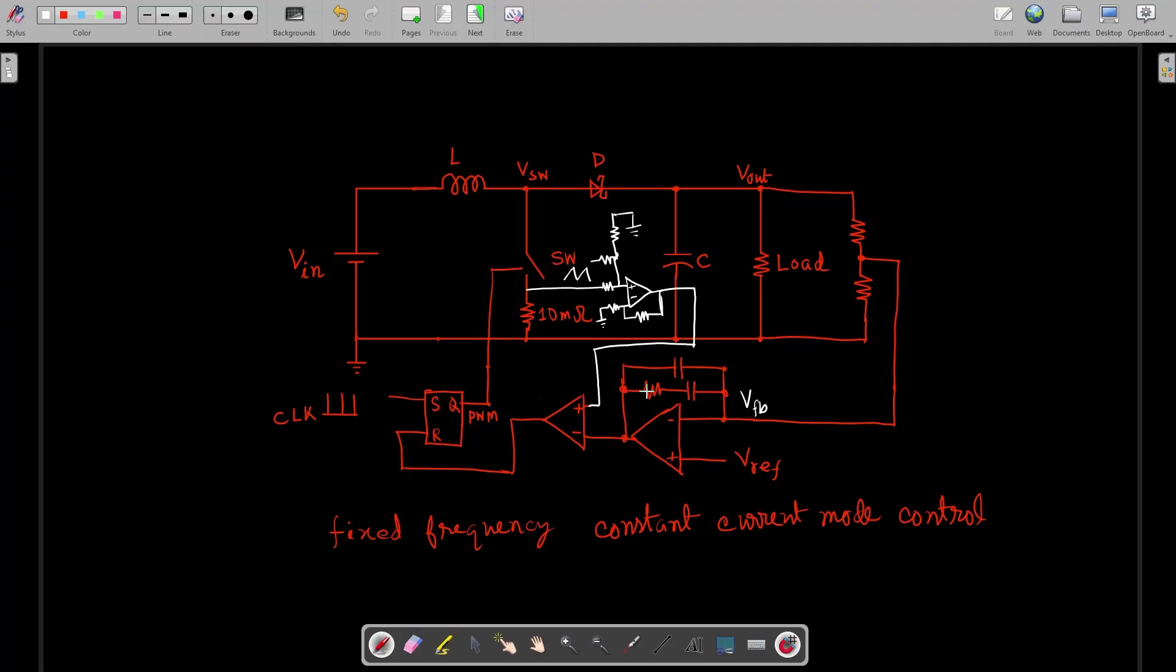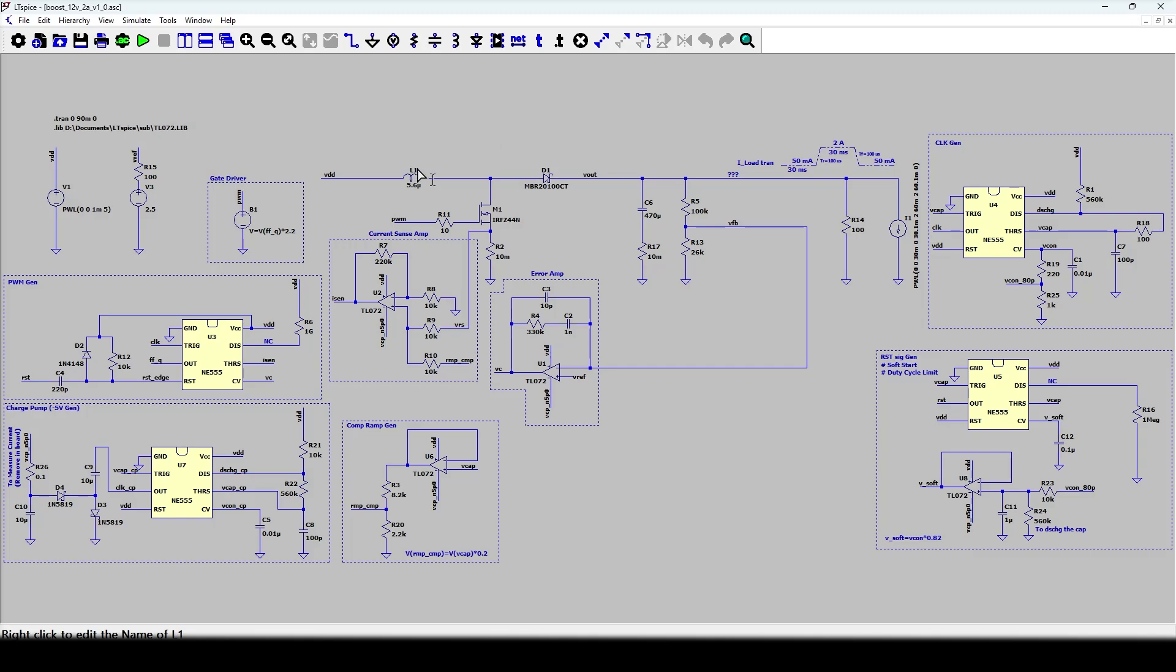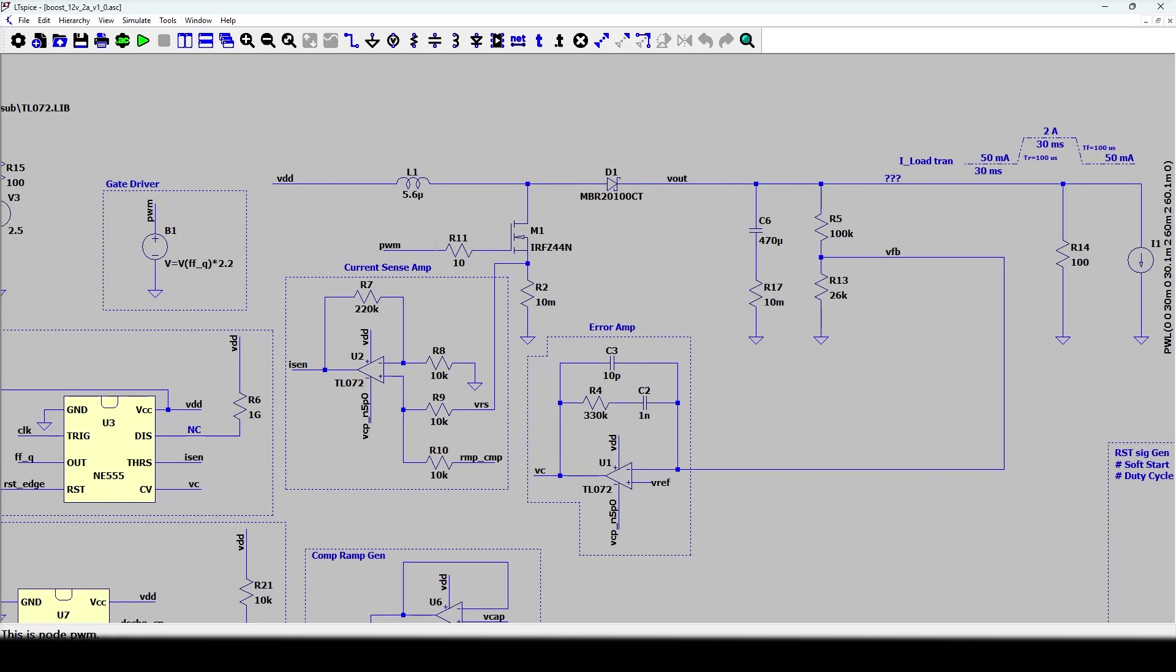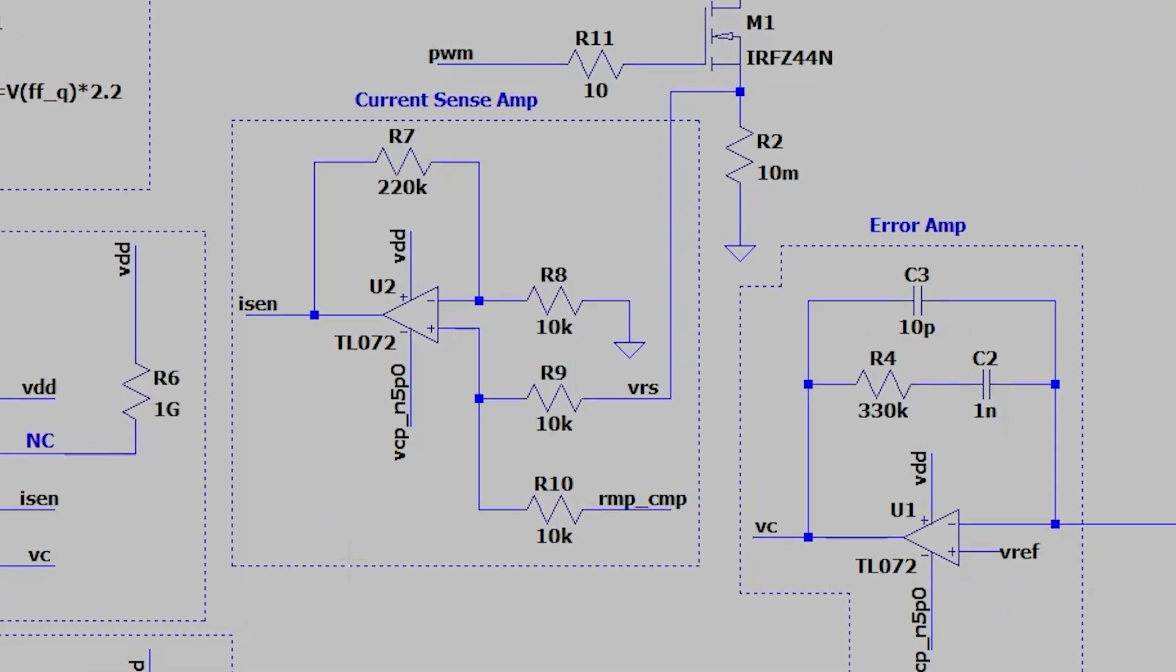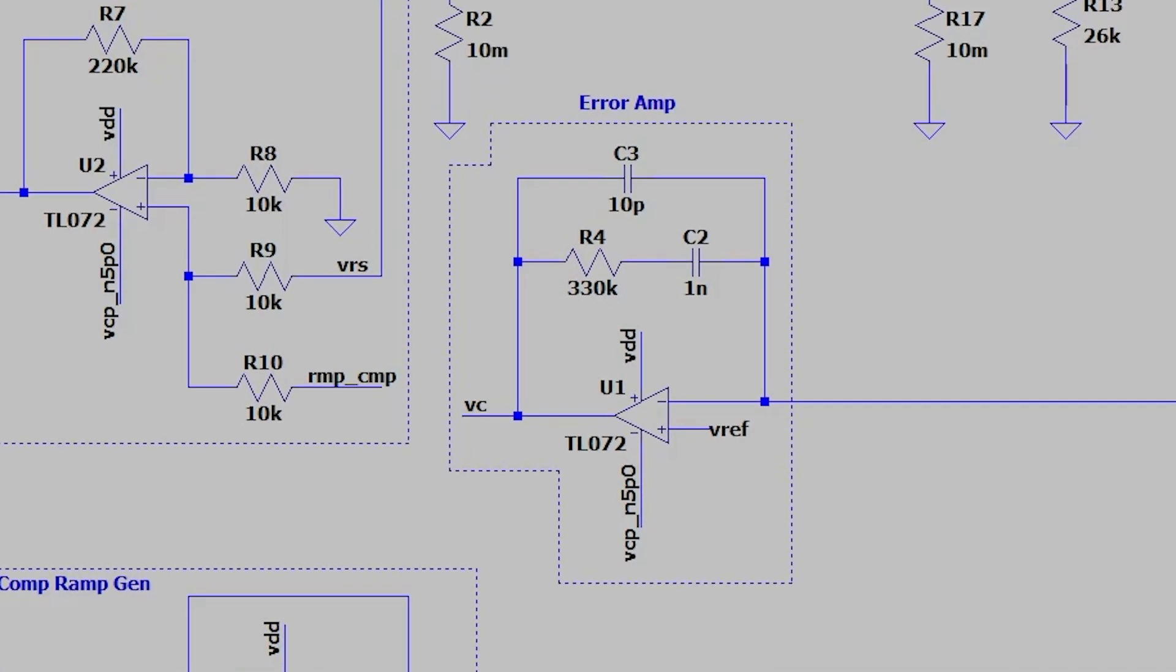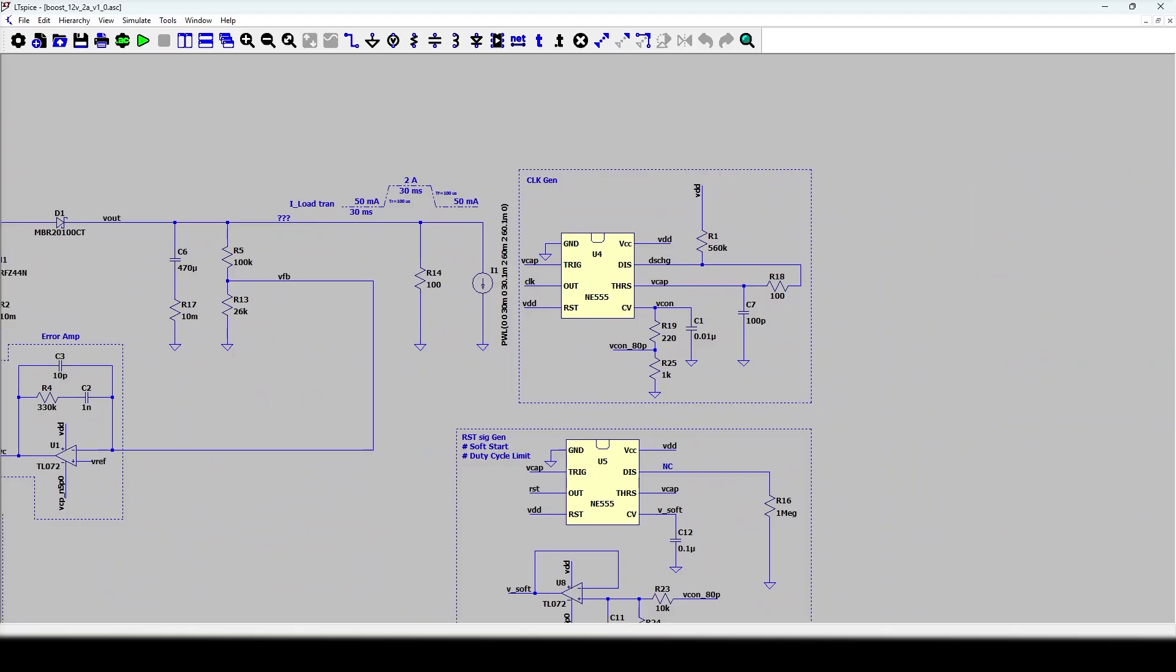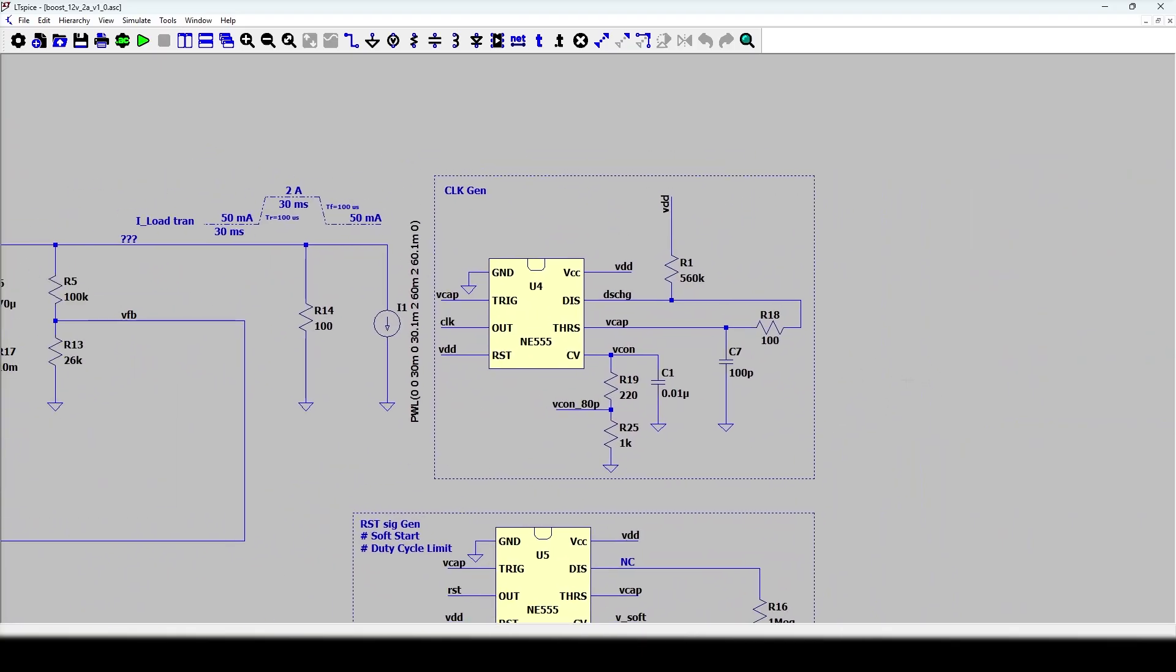Now the calculation part is over and I have fired up the LT Spice. This is the power stage. Here is the 5.6 microhenry inductor. R2 is the sensor resistor. This is the current sense amplifier.